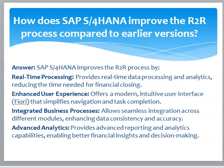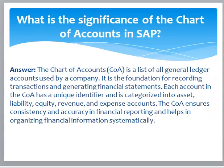How does SAP S/4HANA improve the R2R process compared to earlier versions? Answer: SAP S/4HANA improves the R2R process through: real-time processing — provides real-time data processing and analytics, reducing the time needed for financial closing; enhanced user experience — offers a modern, intuitive user interface that simplifies navigation and task completion; integrated business processes — allows seamless integration across different modules, enhancing data consistency and accuracy; and advanced analytics — provides advanced reporting and analytics capabilities, enabling better financial insights and decision making.